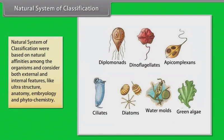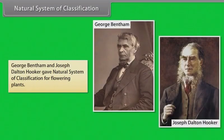Natural system of classification were based on natural affinities among the organisms and consider both external and internal features like ultra structure, anatomy, embryology, and phytochemistry. George Bentham and Joseph Dalton Hooker gave natural system of classification for flowering plants.